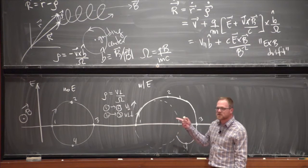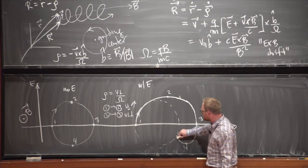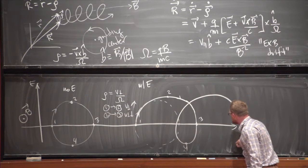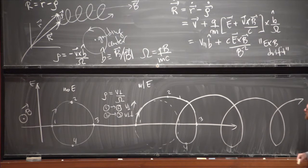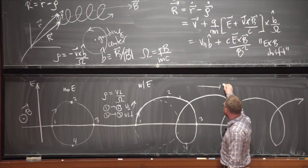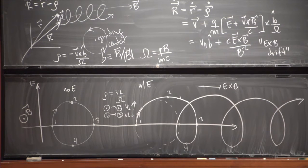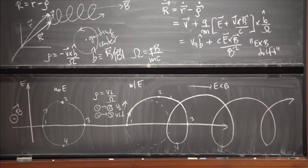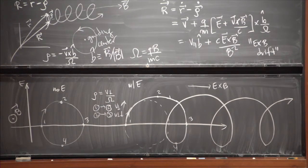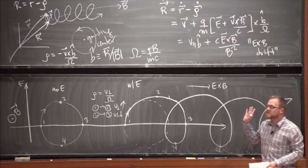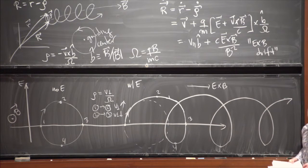As the particle comes back up it gets accelerated again, and the cycle repeats. Lo and behold, using your right hand, this is the E×B direction. This is absolutely crucial in MHD—it underlies the perpendicular dynamics of the particles and is behind things like Alfvén waves. The E×B drift is the dominant drift in the system in MHD.